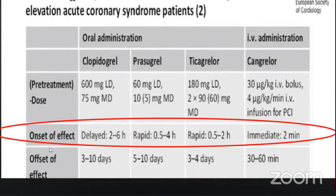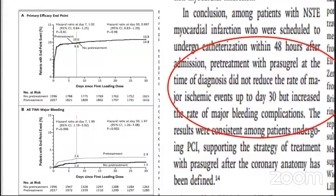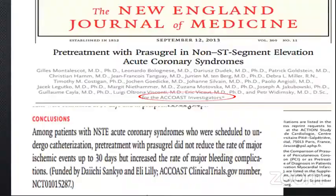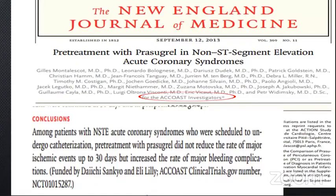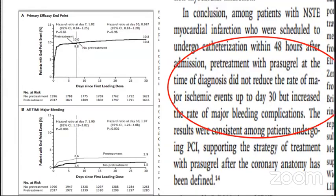The mechanism of action of these medications is very rapid — for example, prasugrel and ticagrelor possibly work between 30 minutes to four hours. Given this, the guideline recommends not using a pre-treatment strategy for patients whose coronary anatomy is not known or for whom early invasive management is planned. The SCOT trial, published in the New England Journal of Medicine in 2013, evaluated the effect of administering the P2Y12 antagonist at the time of diagnosis versus after coronary angiography. The conclusion was that pre-treatment did not decrease the risk of ischemia, but did show an increased risk of major bleeding complications.